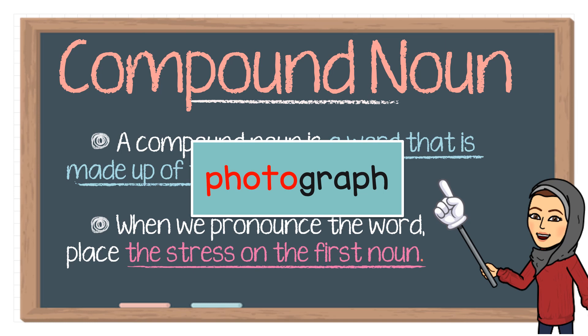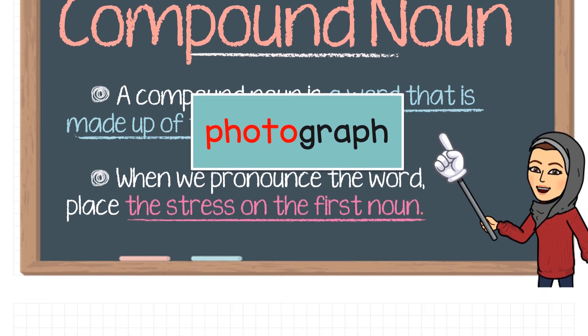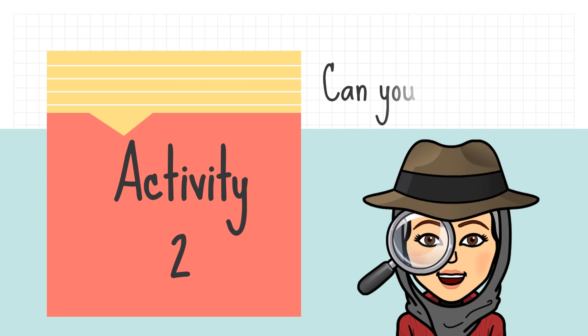For compound noun, we stress the first noun when we read them. For example, we say PHOtograph. Did you hear how I stress the first noun? Very good. Now for activity two, now that you know the compound nouns, I want you to tell me where you can spot these compound nouns.